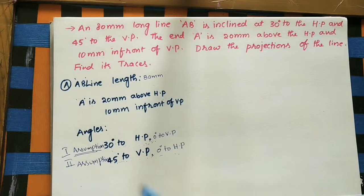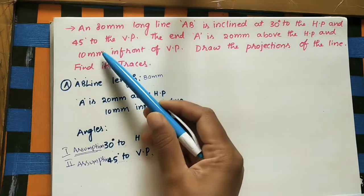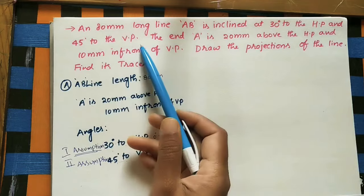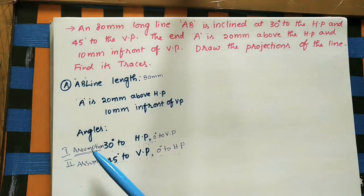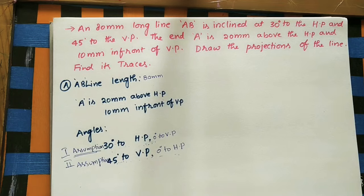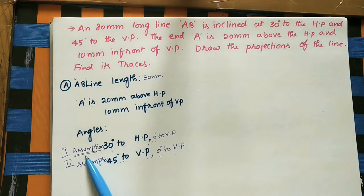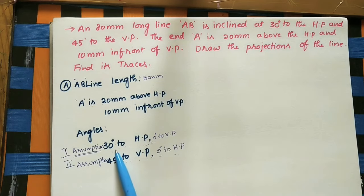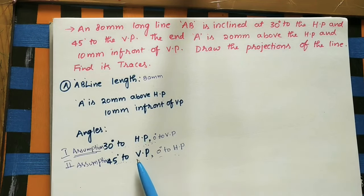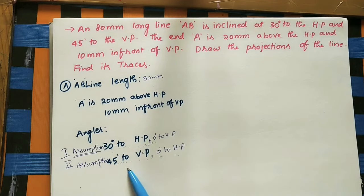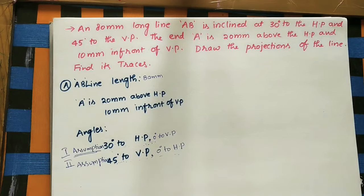Whenever two angles are given for the same line — one angle with the horizontal plane and one angle with the vertical plane — we take two assumptions. In the first assumption, we consider only the angle with HP as 30 degrees and zero degrees to the VP. In the second assumption, we take 45 degrees to the VP and zero degrees to the HP.